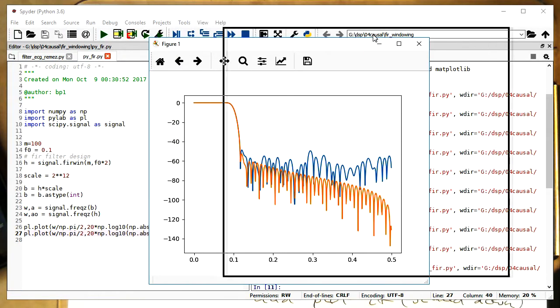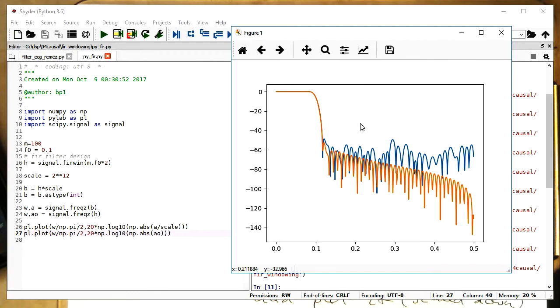Now we see the difference here that with the quantization of 12-bit, the damping here is limited to roughly 50 decibel. And we have some critical moments where it's jumping back up again.